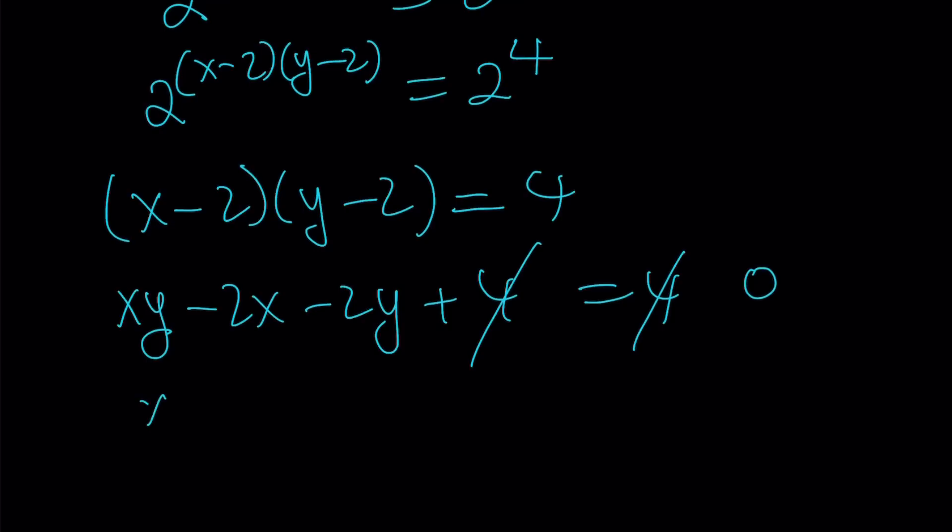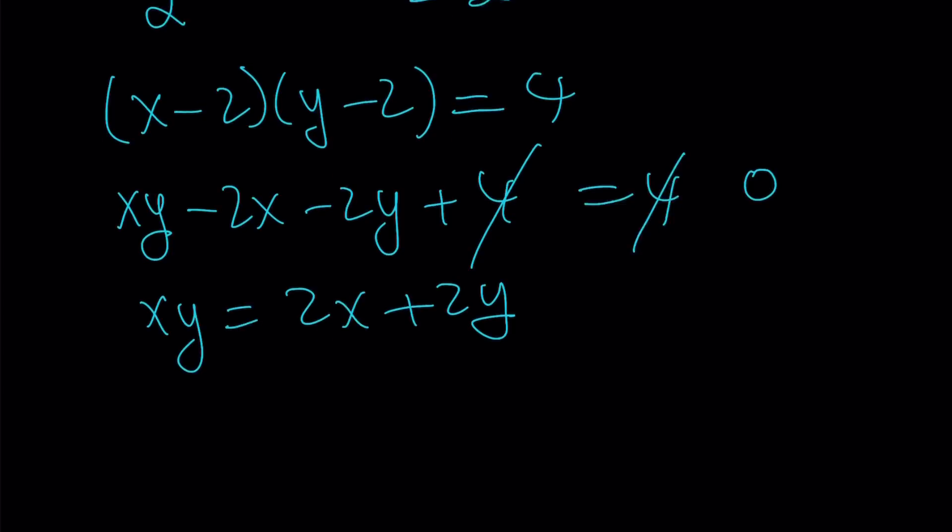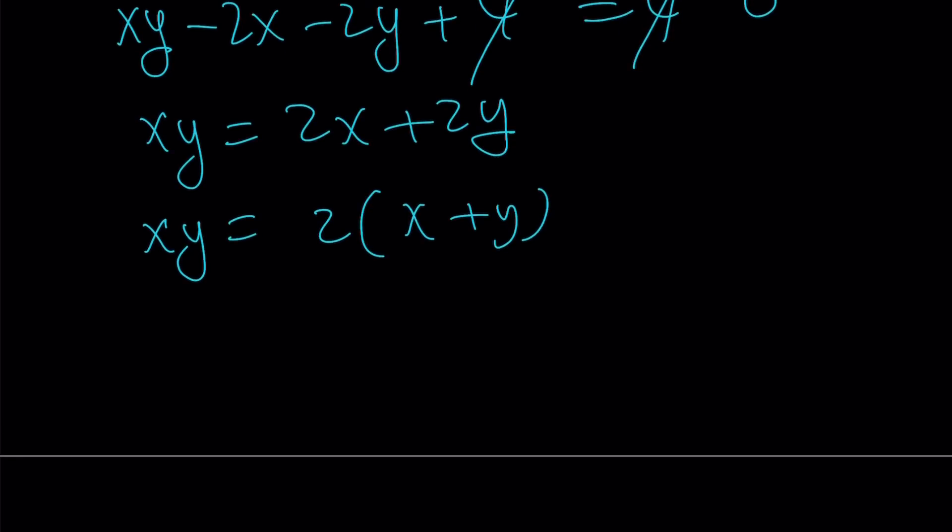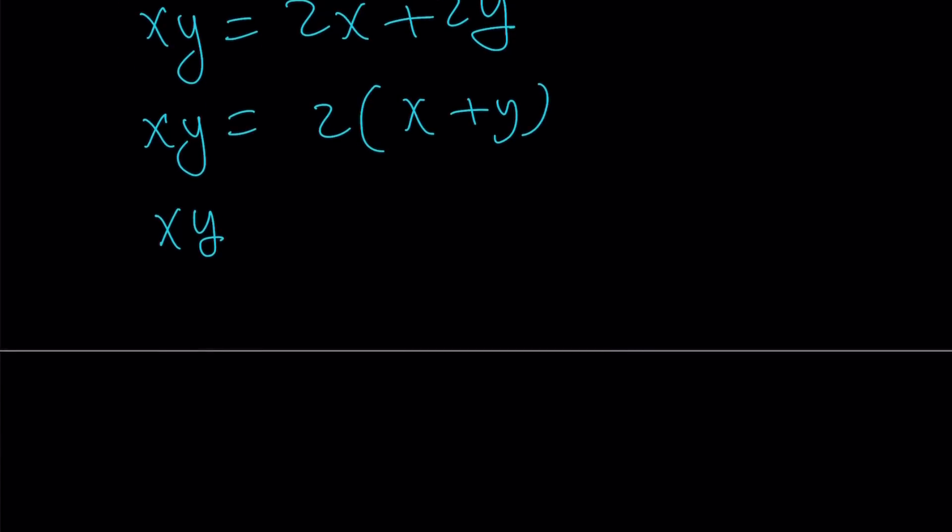From here, I can go ahead and isolate xy and put the 2x and 2y on the other side. And then I can go ahead and take out a 2 and then divide both sides by x plus y. Having been given that x plus y is not equal to 0, you can kind of guess that. xy over x plus y is equal to 2. And that's what I was looking for.